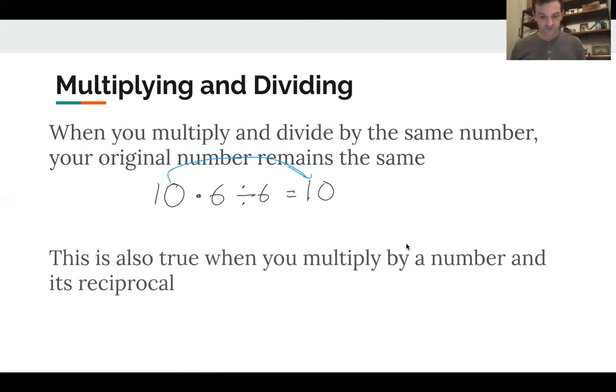Okay. This is also true when you multiply by a number and its reciprocal. So let's start with 10. Let's multiply by 6, and let's multiply by one-sixth. Well, what happens? Well, 6 and one-sixth, this is the number 1. Remember? We talked about it. It has to equal 1, because they're reciprocals. So 10 times 1 is simply 10.